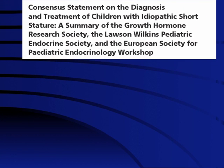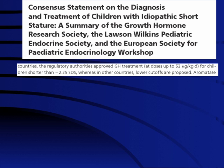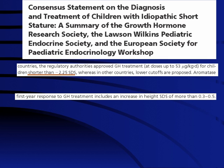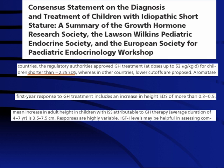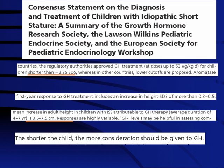Regarding the controversial area of idiopathic short stature, a consensus statement from different pediatric endocrine societies has emerged. Short, otherwise normal children with a normal evaluation including endocrine parameters may be considered for a trial of growth hormone therapy if their height is particularly low. If the child does not respond — meaning growth velocity does not approximately double over a six-month period — treatment should be discontinued. Otherwise, it can be continued for a longer duration; the shorter the child, the more consideration should be given to growth hormone therapy.